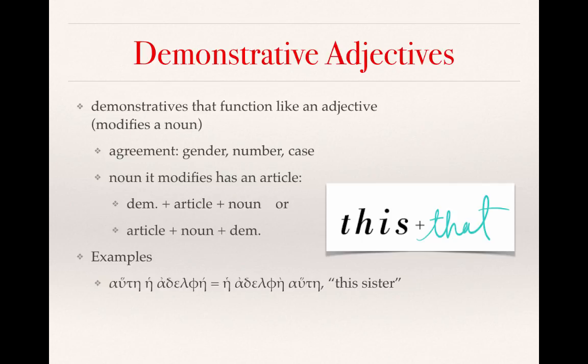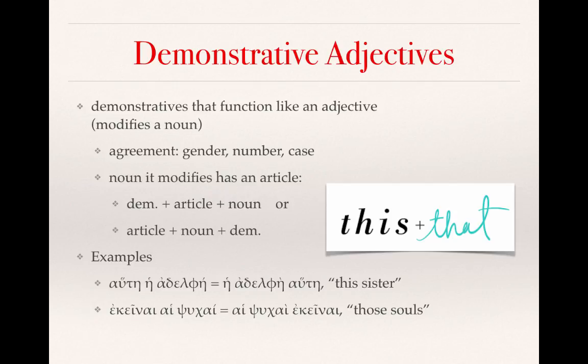Here are a few examples in Greek. Hautei hei adelphei, or hei adelphei hautei — in either case, we would translate it as this sister. Ekeinai hai psuchai, or hai psuchai ekeinai — in either case, we would translate as those souls.